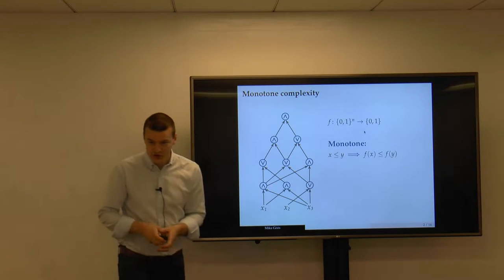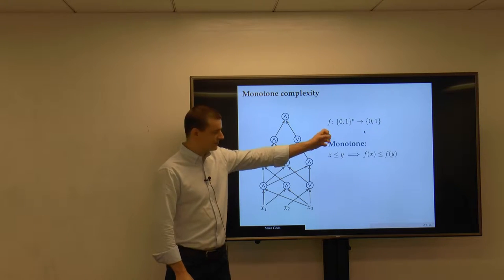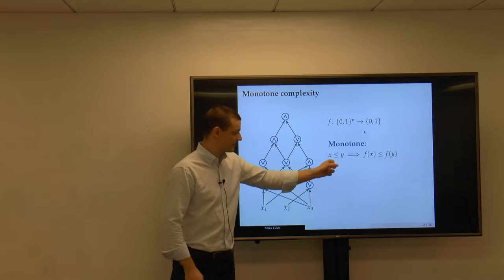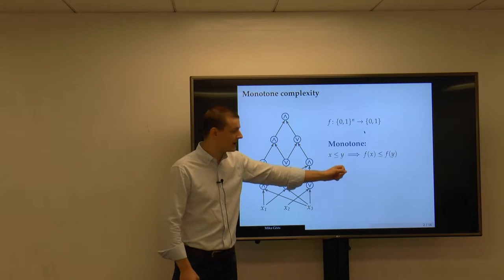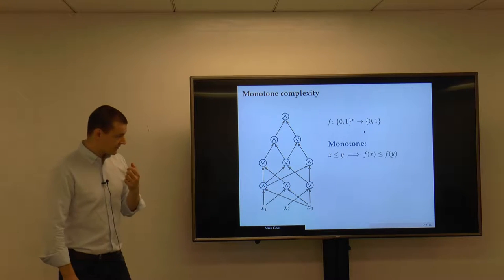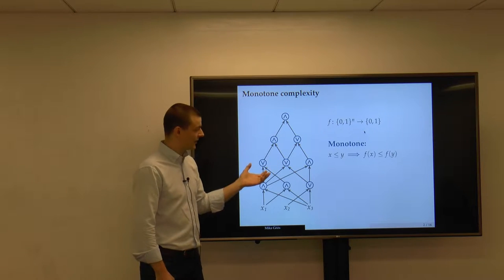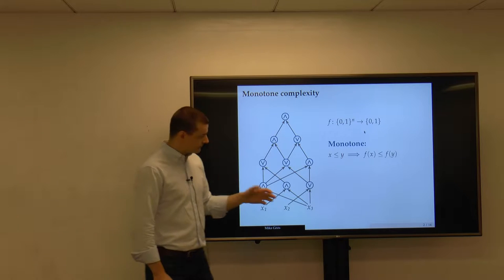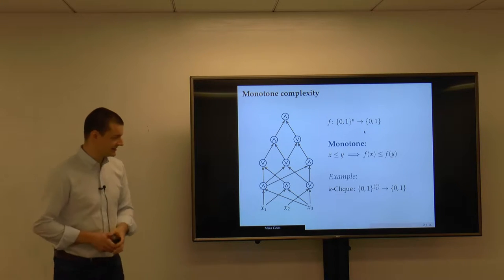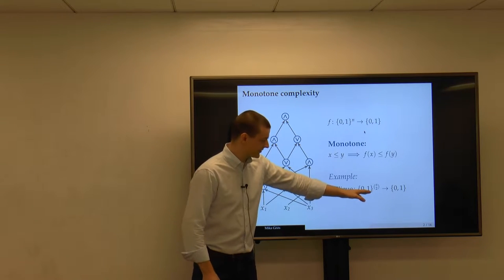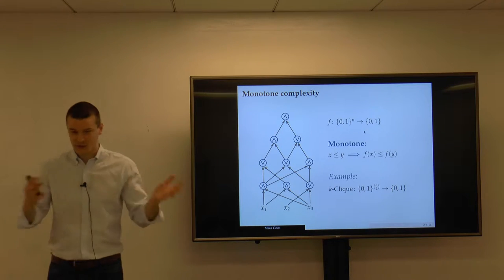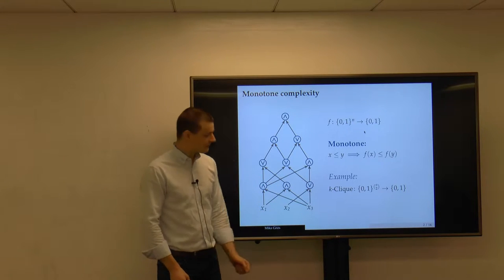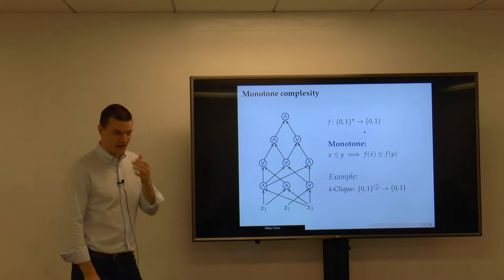Here we study the complexity of monotone Boolean functions — a function from n bits to a single bit. We say it's monotone if for any input pair of n-bit strings ordered coordinate-wise, meaning every bit of x is at most the corresponding bit of y, we require the output of the function is similarly ordered. Monotone functions are precisely those computed by monotone circuits — circuits with only AND and OR gates, no negations. A canonical example is the k-clique function: it takes as input the adjacency matrix of a graph and outputs one if the graph contains a k-clique.